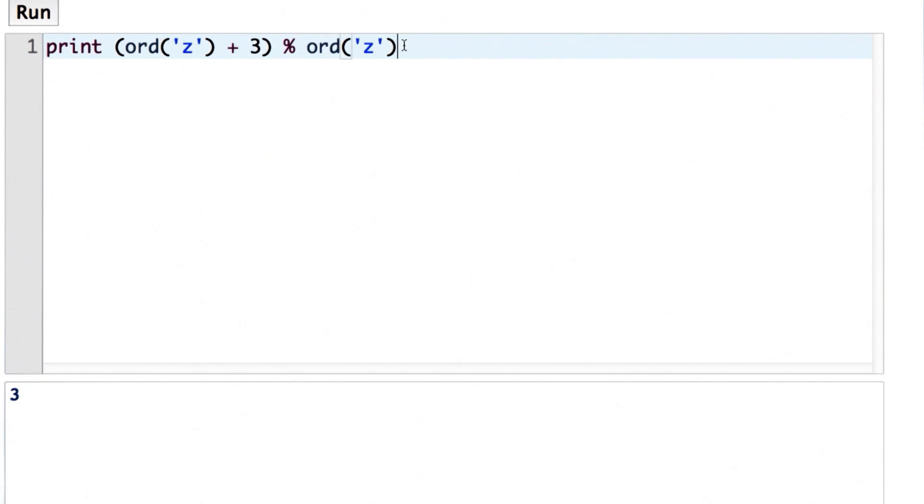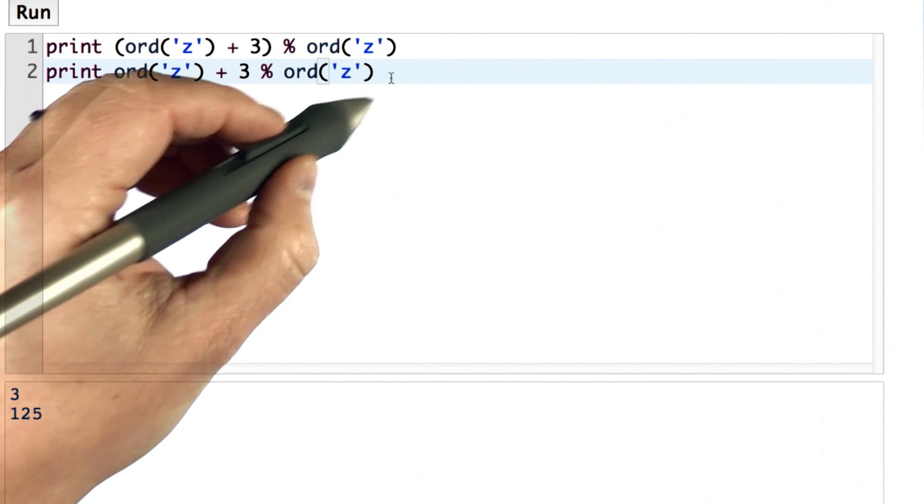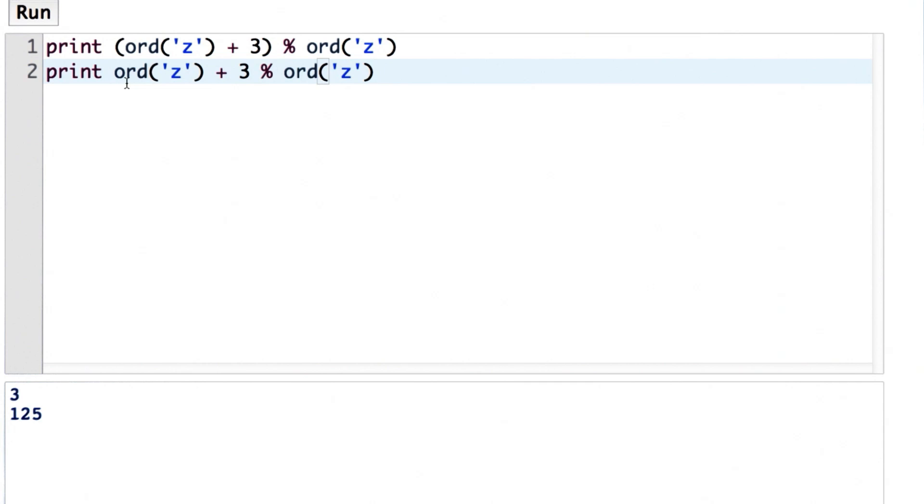And I want to point out that the parentheses here are actually important. If we didn't have them, if we tried ord of Z plus 3 mod ord of Z, then we get the result 125. And the reason for that is the grouping here is going to group 3 mod ord of Z and add that to ord of Z. So it's a different value.